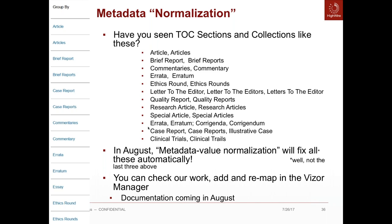We'll be rolling out the metadata normalization tool with the data updates that come in August. The system will automatically fix singulars and plurals — it knows the difference between words with and without an S, with ES, and a Y ending, but it won't do automatic fixes for Latin plurals like 'errata/erratum' or 'corrigenda/corrigendum.' You can adjust the automatic merging of metadata categories, or take manual control to merge things yourself. We'll publish complete documentation in August when the feature is released. If you'd like it applied to your data before the mid-August update, just let us know.